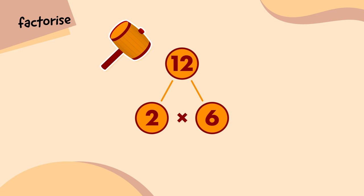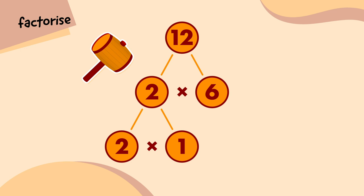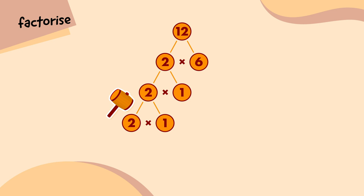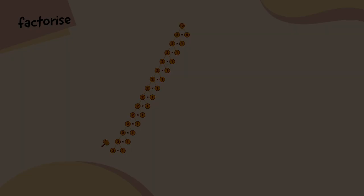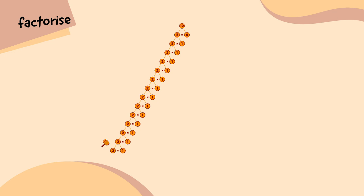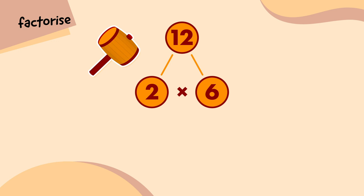Let's start with 2. 2 times 1 — but 2 can't be broken down further in any useful way. Let me just change my hammer settings so it detects prime numbers.